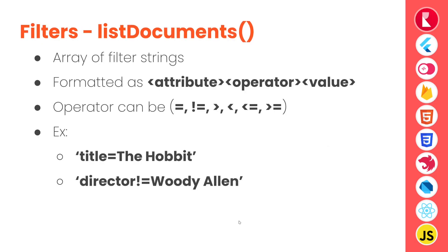When listing data from AppWrite database, AppWrite's SDK provides a method called list documents. Using this method we can provide filters to filter the data set we receive. Filters are just an array of strings formatted as attribute, operator, value. The operator can be equal to, not equal to, greater than, less than, less than or equal to, or greater than or equal to. For example, with a books database we can filter like title equals 'The Hobbit' to get only that book, or with a movies database we can list documents where director is not equal to 'Woody Allen'.